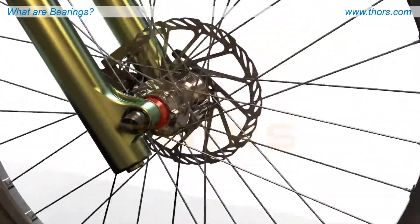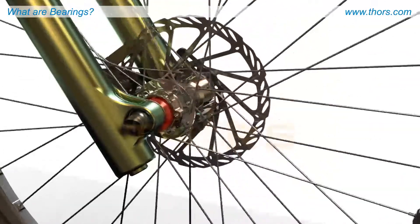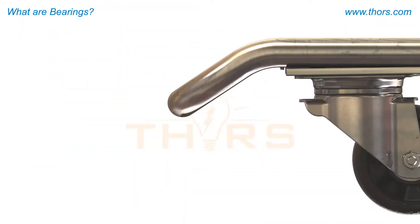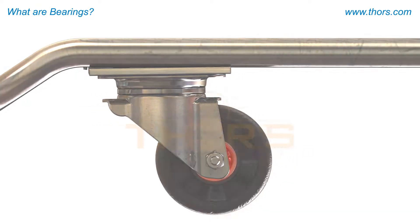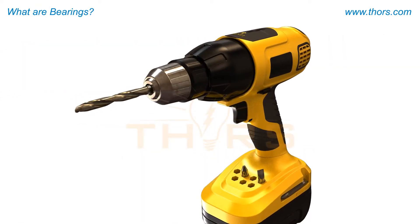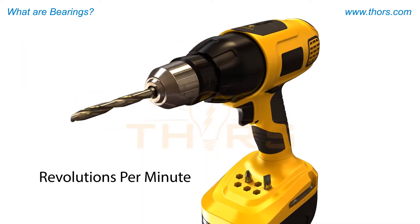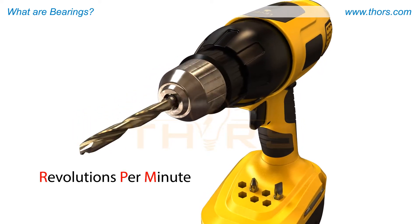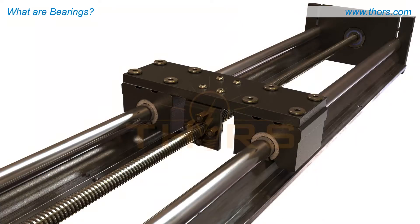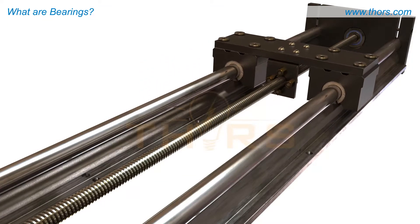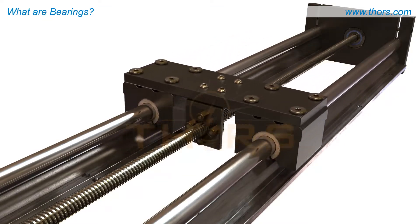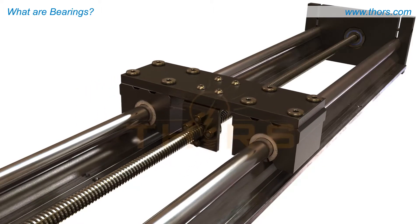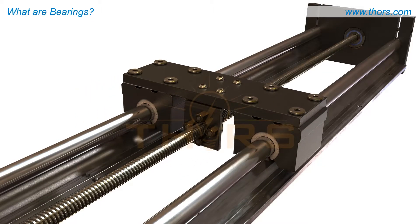Rotary motion is involved when components are spinning or rotating in a consistent circular loop. This type of motion is commonly used in rotating equipment such as wheels and is measured in revolutions per minute, or RPM. Linear motion is involved when components are moving in one direction or another, typically back and forth.